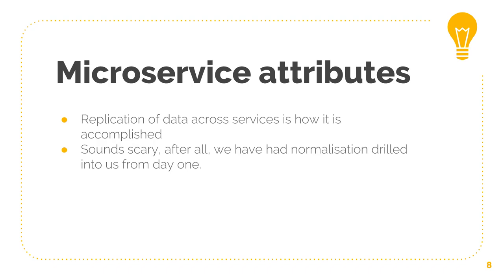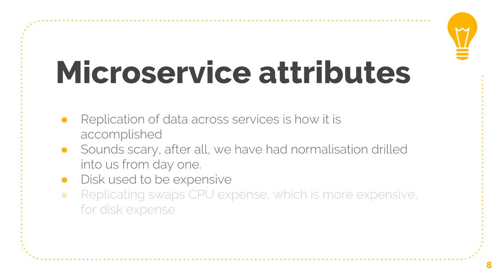Replication of data across services is how you accomplish not having to continuously perform synchronous communications between your services. This sounds like a very scary idea, because if you've been a web developer for any time, the idea of normalization would have been drilled into you from day one — that your database structure should be normalized, your foreign keys should be what you use to join your data to get the relationships down. But really, it doesn't sound as scary as it might seem. It's a very pragmatic way to solve this problem. Relational databases essentially came about during the days when disk space was incredibly expensive, which it isn't anymore. So the idea of denormalizing is basically swapping CPU expense — which is more expensive now, and is what you use to do your joins — for disk expense. You're essentially replicating data out, costing a bit more disk, but disk these days is very, very cheap.